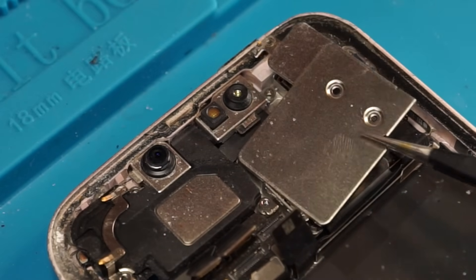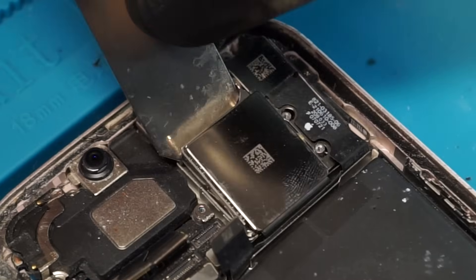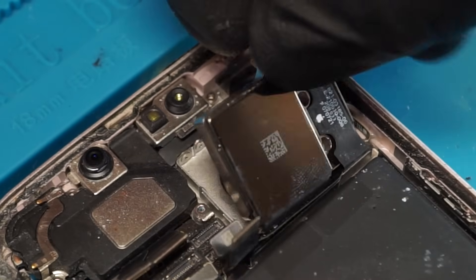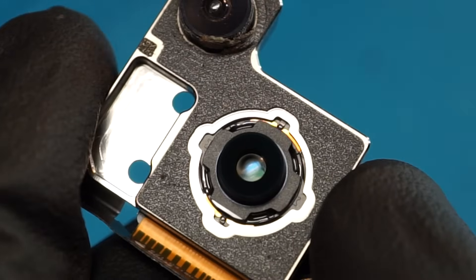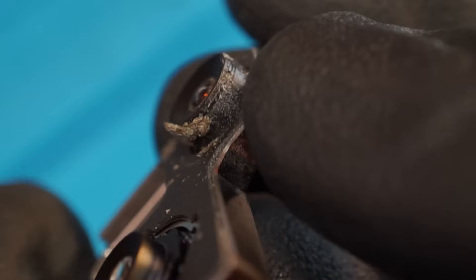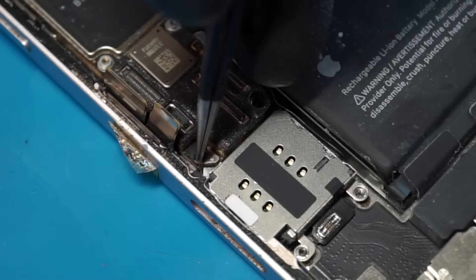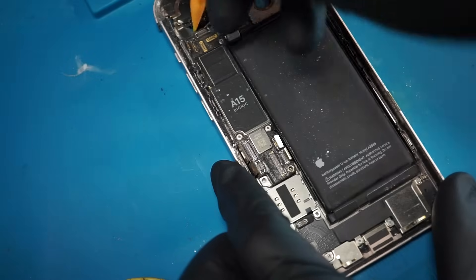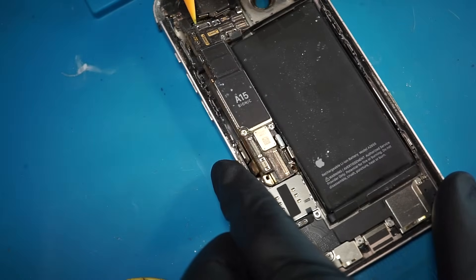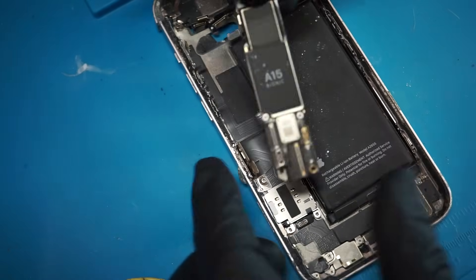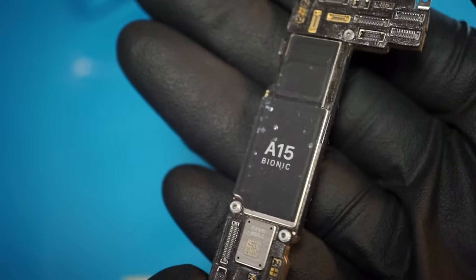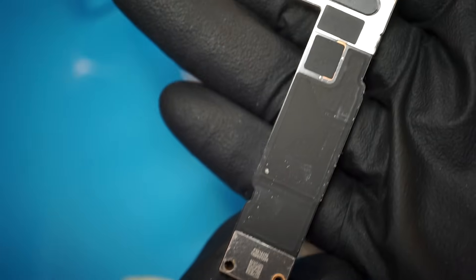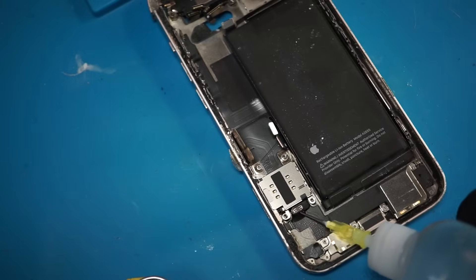Next we can remove the camera shield which then allows us access to remove the camera itself. We may repair this lens in a different video. Apple's playing hide and seek with us with these screws. But we found them. We can now remove the logic board from the housing of the phone. Considering how badly damaged this phone was, this logic board looks to be in good condition.